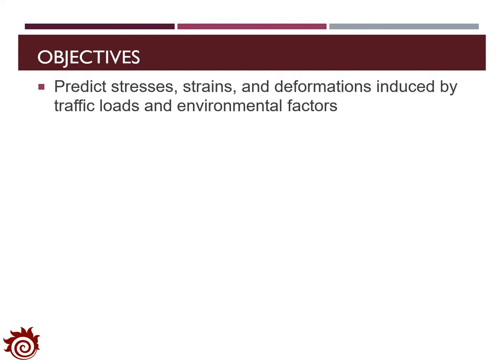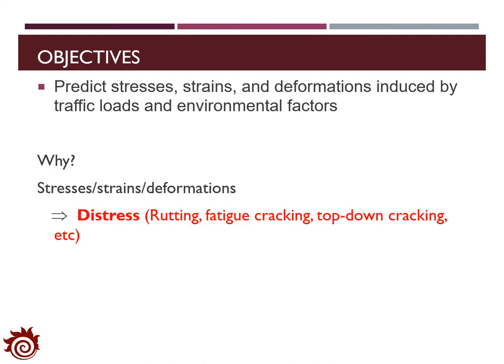Generally, the objective of the analysis is predicting the stress, strain, and deformation induced by traffic loads and environmental factors on flexible pavements. This analysis is very important because stresses, strains, and deformation cause distresses to flexible pavement structures, such as rutting, fatigue cracking, top-down cracking, and so on. These are directly related to functional or structural failures of flexible pavements.